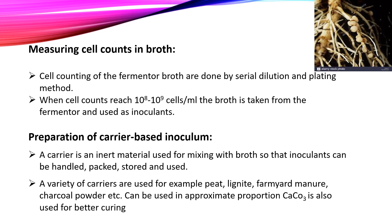In mass inoculum production, cell counts in the broth are measured. Cell counting of the fermenter broth is done using the serial dilution and plating method. When the cell count reaches 10⁸ to 10⁹ cells per ml, the broth is taken from the fermenter and used as an inoculant.